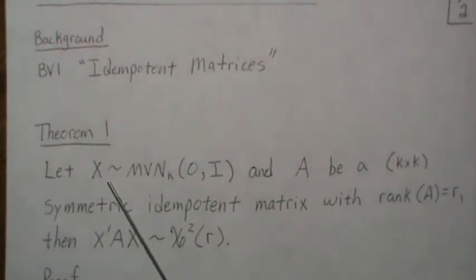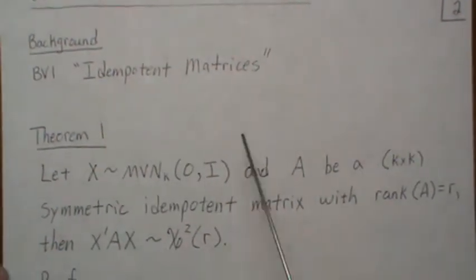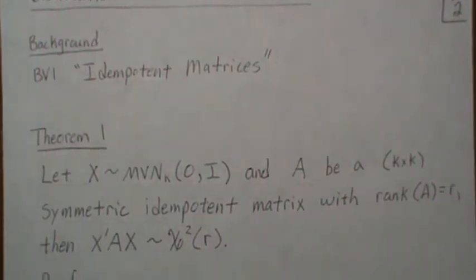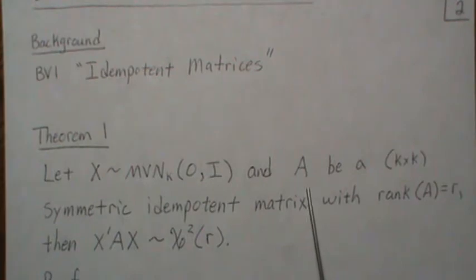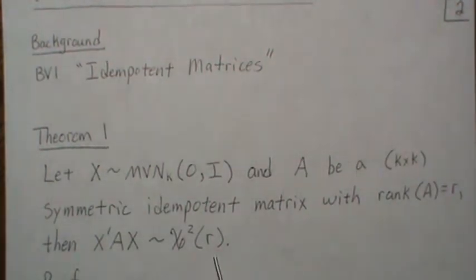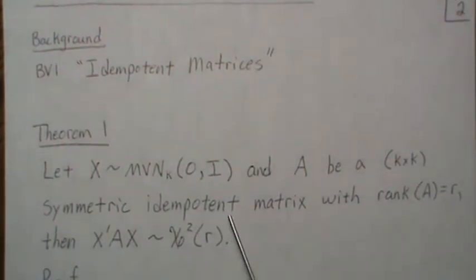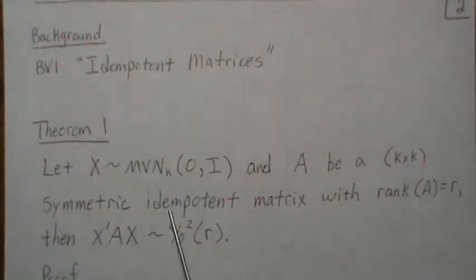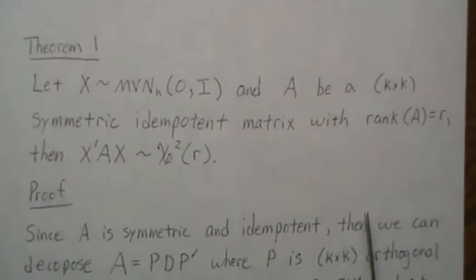We're going to let X be a K by one vector. I always get critiqued for not having vector signs or bold notation, but I think it makes the paper more cluttered, so I'll leave them off when there's no ambiguity. X is multivariate normal zero I, and A is a K by K symmetric idempotent matrix with rank R. Then this quadratic form X'AX is chi-squared R. Since A is idempotent, the rank of A equals the trace of A, so summing the diagonal elements gives R. Also, idempotent matrices have eigenvalues that are zero or one.